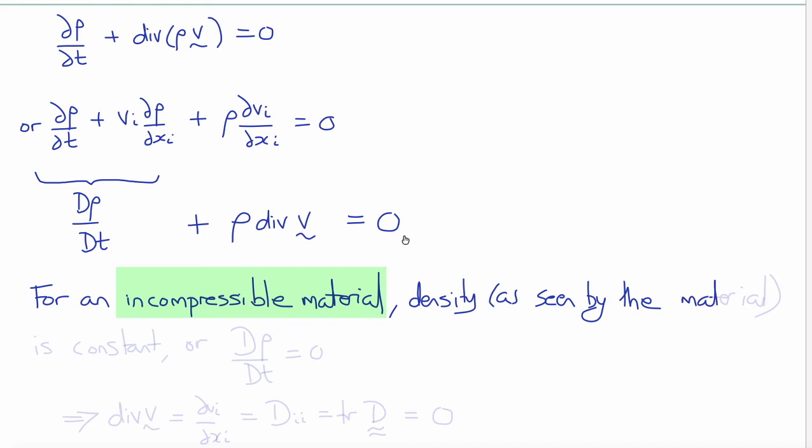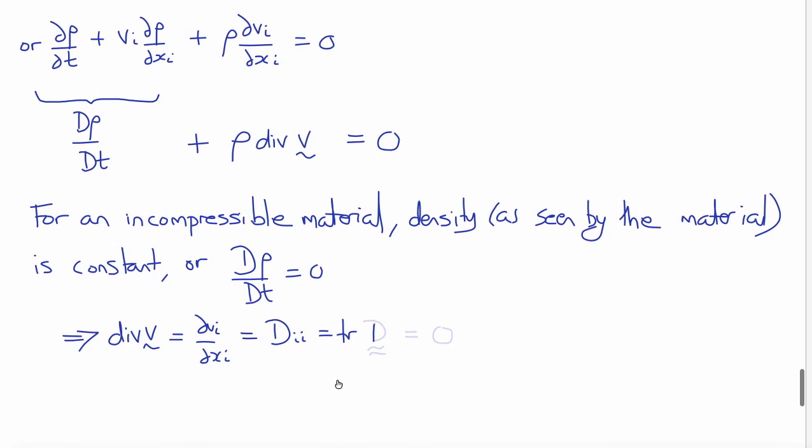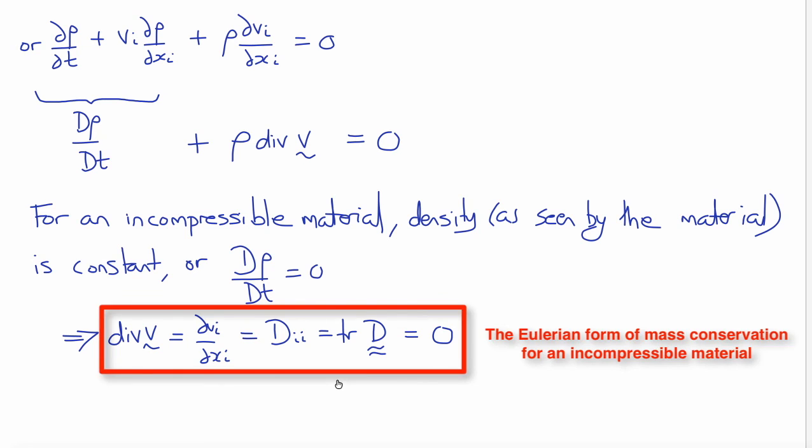Now, again, if we have an incompressible material, then the density from the point of view of the material is constant. In other words, the material derivative of the density d rho dt is equal to 0. And therefore, our conservation of mass simplifies to div V, which is del vi del xi, which is also dii, the trace of the rate of deformation tensor, must all be 0. So that is the Eulerian form of conservation of mass for an incompressible continuum.